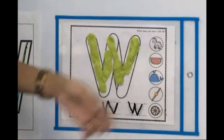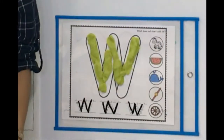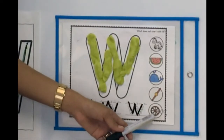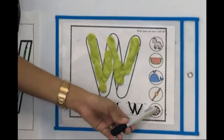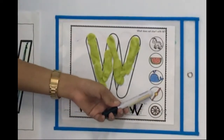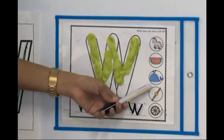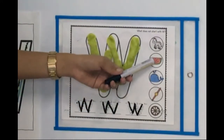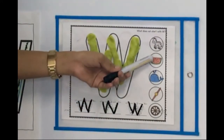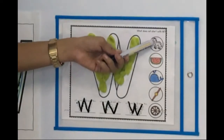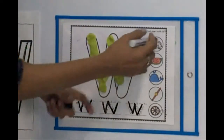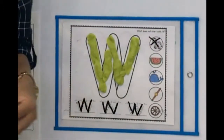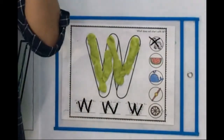How about we look for the picture that doesn't start with the letter W? W is for wheel — yes. W is for watch — yes. W is for whale — yes. W is for watermelon — yes. W is for zebra — no! Let's put an X, because zebra doesn't begin with the letter W.